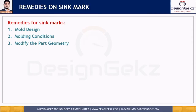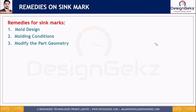By modifying the runner and gate system, we can eliminate the sink mark. Increasing the runner or gate dimension, or using multiple gates, will fill the cavity faster in a short time. The second mold design remedy is relocating the gate closer to the thicker sections, which allows material to be packed into the mold before the thinner section freezes off.